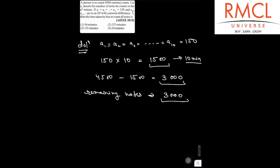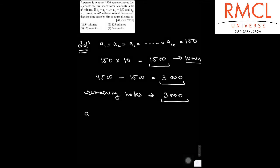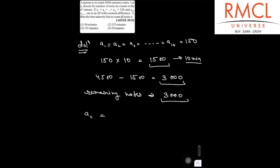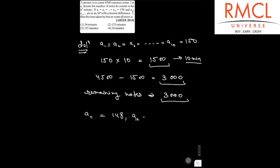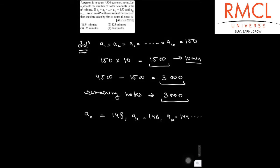So now it is given that A10 and A11 are in AP with common difference 2. Then A11 will be 150 minus 2, that is 148. A12 will be 146, A13 will be 144 and so on.